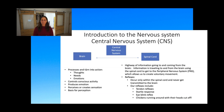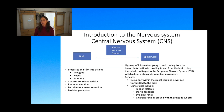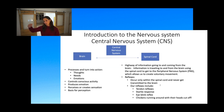The brain processes thoughts, needs, and emotions into action. We control conscious activity from the brain, produce emotion, and perceive or create sensation — that's our basis for perception of the world. In the spinal cord, we have a highway of information coming and going to and from the brain. Everything gets all the way to that peripheral nervous system, which allows us to create voluntary movement. Our reflexes can occur only in the spinal cord and never get transmitted to the brain — like those tendon reflexes when a doctor taps on the front of your knee.